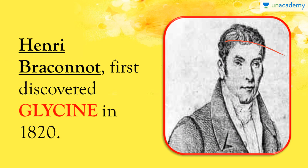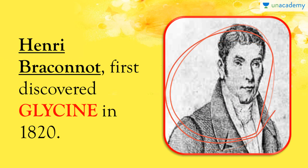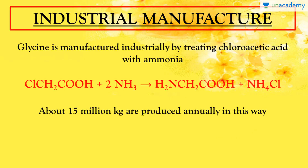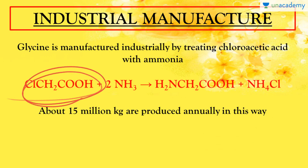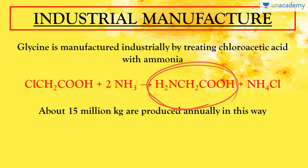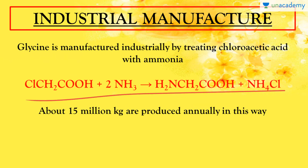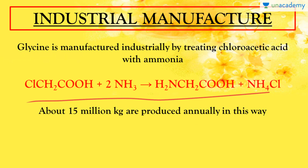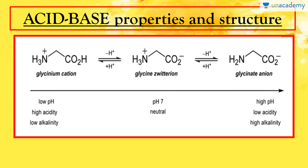If we talk about the discovery of glycine, Henry Braconnot first discovered it in 1820. Regarding industrial manufacture, since glycine is an important industrially used amino acid, it is manufactured using chloroacetic acid along with ammonia. This method has been used for a long time and can synthesize approximately 15 million kilograms annually, making it a very popular and successful synthesis method.